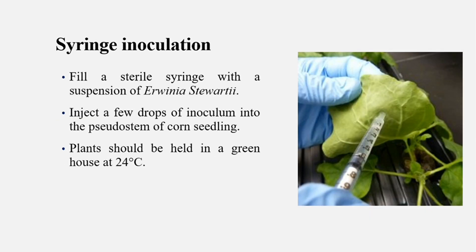The third is syringe inoculation. We take an exterior syringe and fill it with Erwinia stewartii suspension. Then we inject it to push drops into the plant part — the leaf or stem. Lastly, we keep it in a clean greenhouse at 24 degrees Celsius.